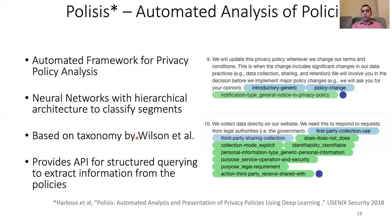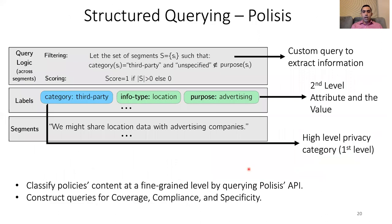We use Polisis — from our previous work — to automatically tag each policy according to this taxonomy. Polisis is an automated framework for privacy policy analysis that works by breaking each policy into segments. It assigns each segment one or more privacy categories and a set of attribute-value pairs. For example, an attribute-value pair might indicate that the personal information type is 'generic personal information' or the purpose is 'legal requirement.' Polisis enables an API to automatically query the tags of a policy, effectively making the privacy policy machine-readable.